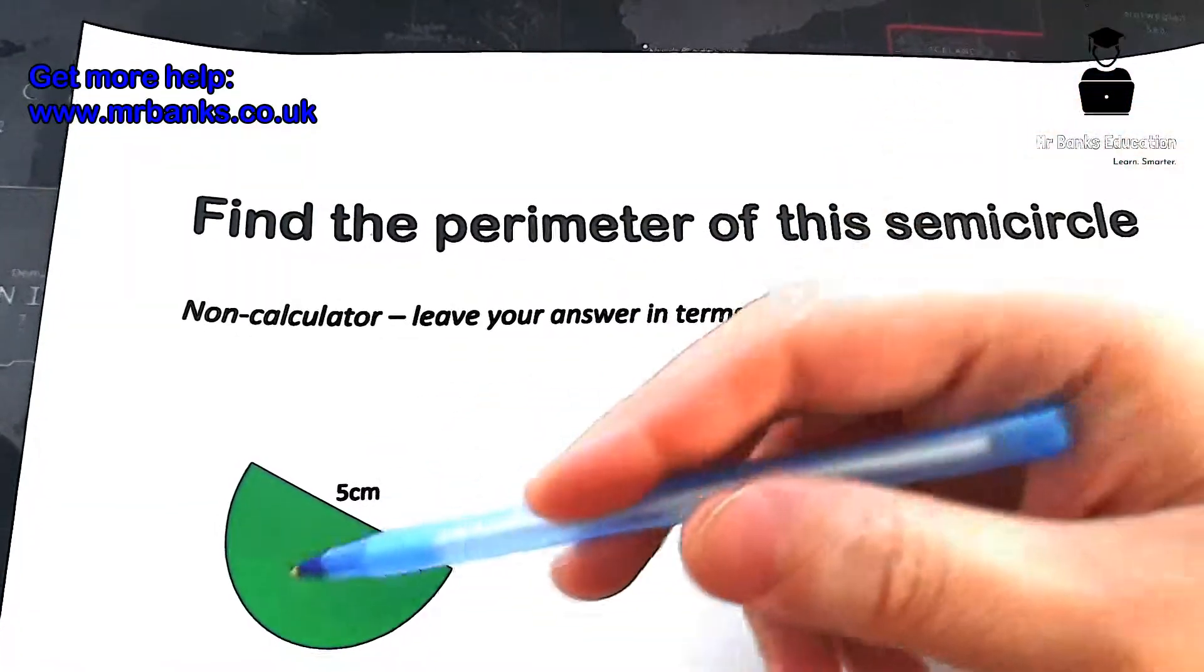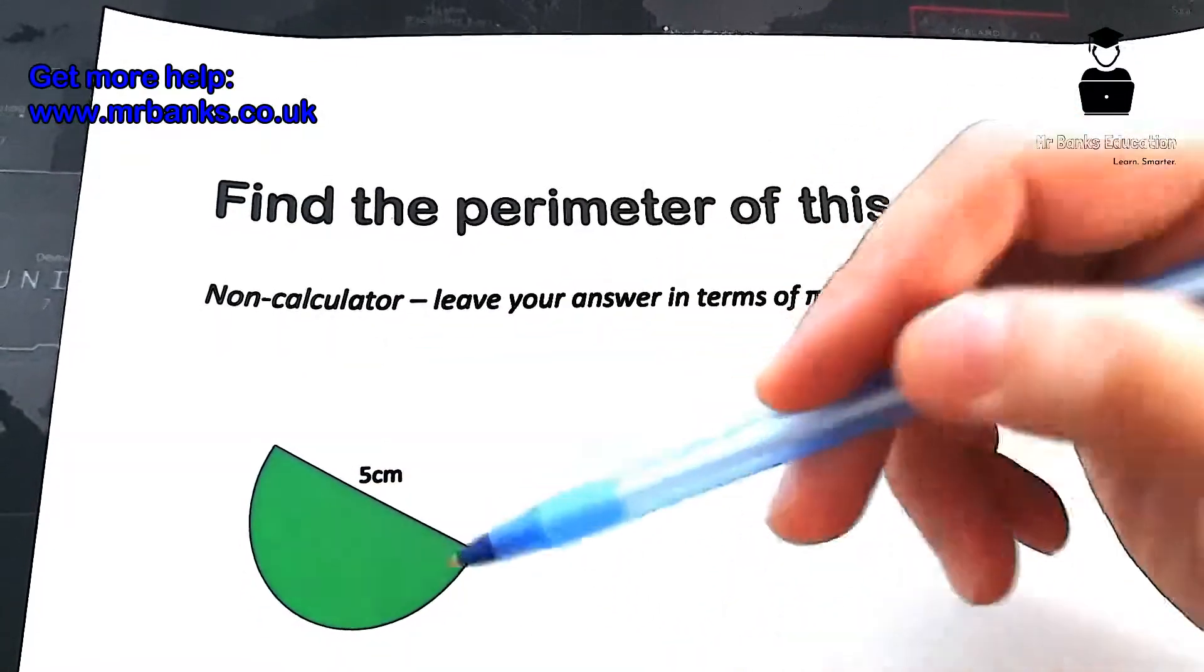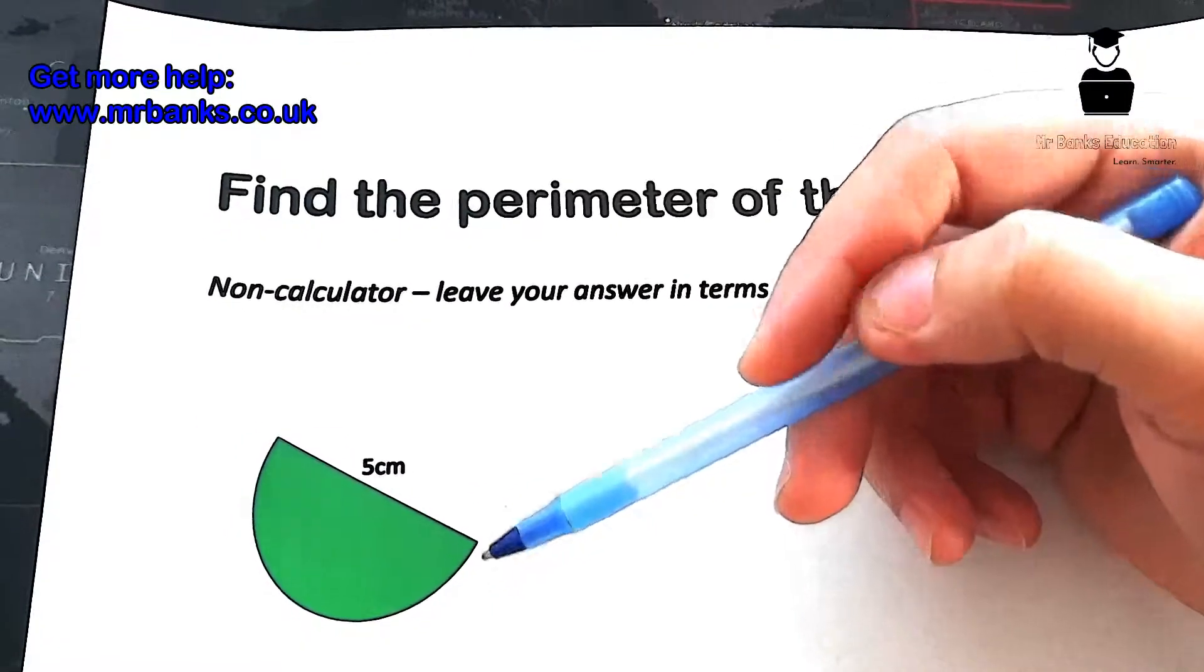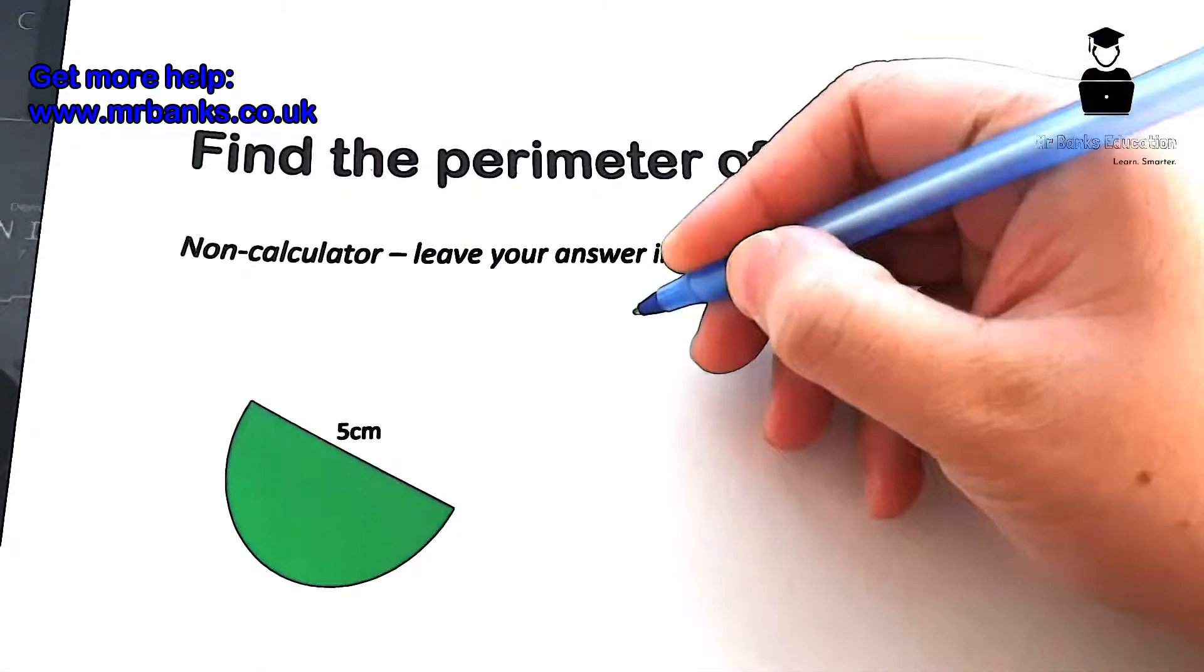circle is also called the circumference - it's the measurement, the distance around the circle. Okay, so first of all we need the formula for that. The formula for that is 2πr.